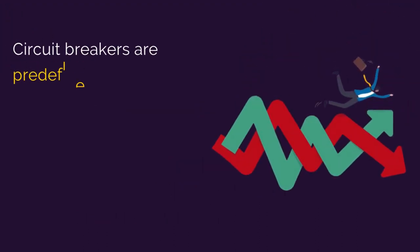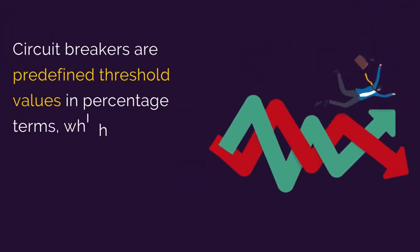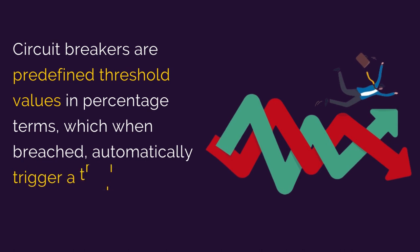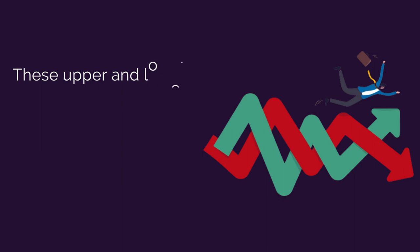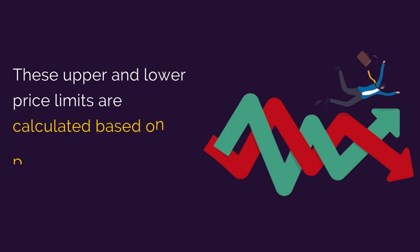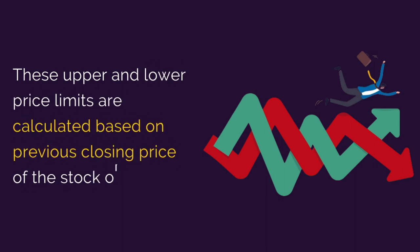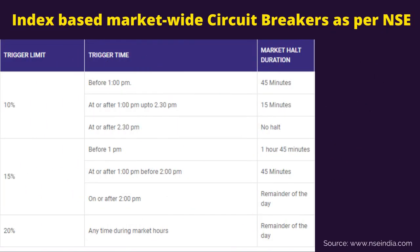Circuit breakers are predefined threshold values in percentage terms which, when breached, automatically trigger a trading halt for a short period of time. These upper and lower price limits are calculated based on the previous closing price of the stock or index. As you can see, these are the index-based market-wide circuit breakers as per NSE, with details pertaining to the index trigger limit, time, and duration of market halt.